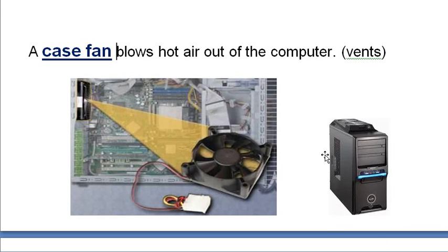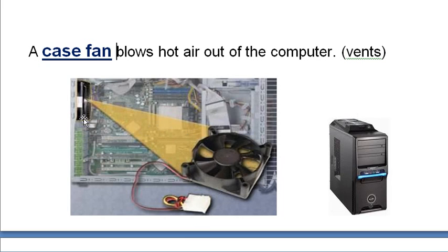What the case fan does is it blows hot air out of the computer. If you look at your computer you'll see vents — there are air vents on your computer. The case fan sits on the inside of your computer, blows cool air from outside in, and then forces all the hot air out through the vents. It has a little power cable that connects to the motherboard, and that's how it's powered.